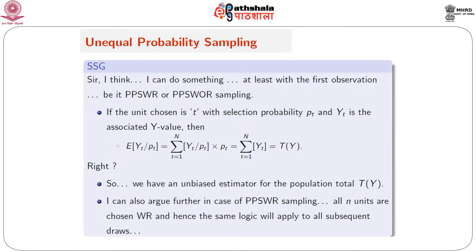I think I can do something at least with the first observation, be it PPSWR or PPSWOR sampling. That's true, because when you talk about the first observation, it does not really matter whether it is with or without replacement. If the unit chosen is t with selection probability pt and yt is the associated y value, then the expectation of yt divided by pt is the summation of yt divided by pt times pt, which equals ty, the population total. So we have an unbiased estimator for the population total ty.